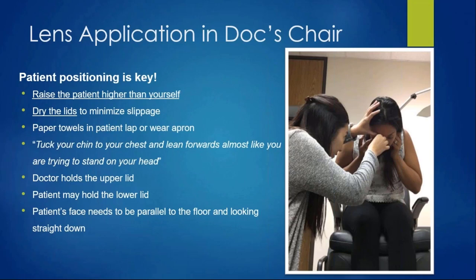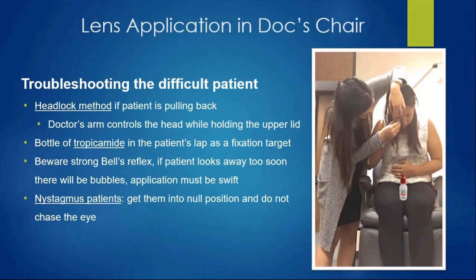If you have a tough patient, use the headlock method—your forearm essentially pushes their head down and keeps them parallel to the floor. If they're looking all over the place, give them something to look at like a bottle of tropicamide in their lap for fixation. For patients with nystagmus who need scleral lenses, rotate them into their null position so they're not bouncing around. Don't chase the eye—wait patiently. When in doubt, grab your attending; they're more than happy to help.